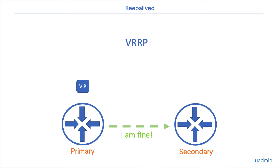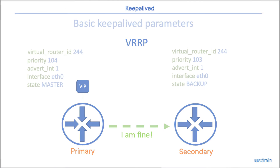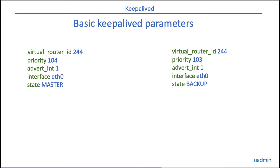Now let's get a quick overview of Keepalived. In its simplest form, two machines share something called a virtual router ID. This is a unique number that creates a ring between the different participating machines. The primary, or master as it's called in Keepalived, has a higher priority than the secondary or backup. You can have multiple backup machines that all have different and lower priorities than the master. This value should be within the range of 0 to 255.